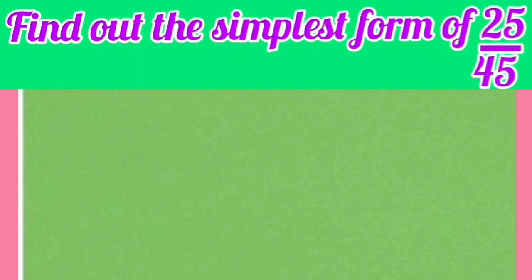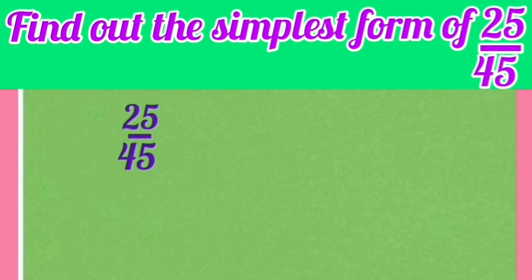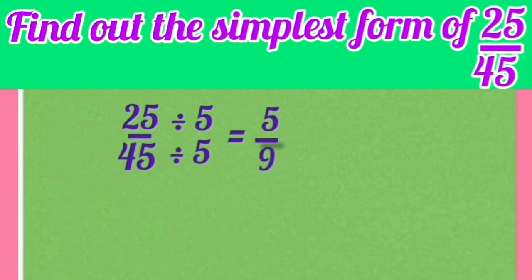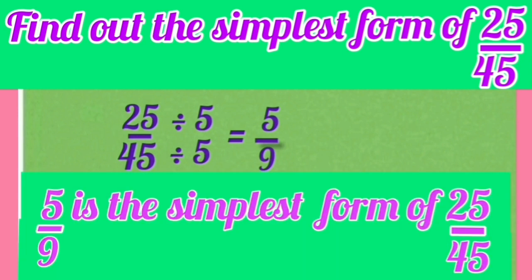Now we will find out the simplest form of the fraction 25 upon 45. In 25 upon 45, both numerator 25 and denominator 45 can be divided by 5, which is a number other than 1. So on dividing by 5, we get the fraction 5 upon 9. Students, now tell me, can we divide both 5 and 9 by a number other than 1? No. So the fraction 5 upon 9 is the simplest form of 25 upon 45.